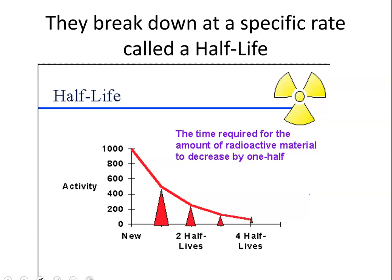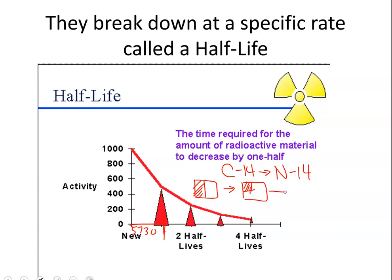Carbon-14 actually turns into a different isotope — nitrogen-14. It does this slowly: a half-life for carbon-14 is about 5,730 years. After that amount of time, about half is gone. After a second half-life, there'd be only a quarter left. After a third half-life, only an eighth. So each additional 5,730 years cuts the remaining amount in half again.